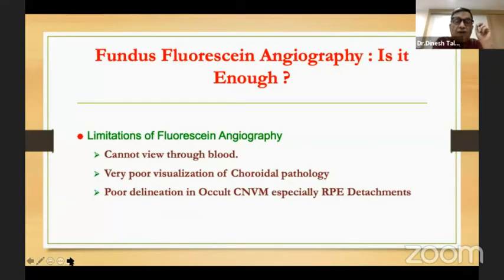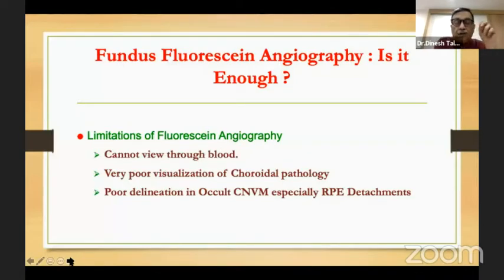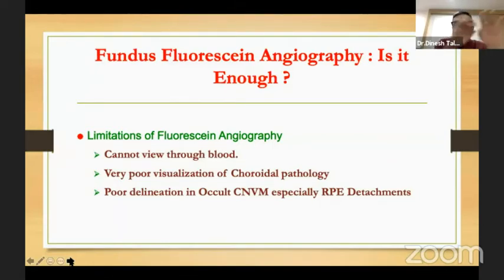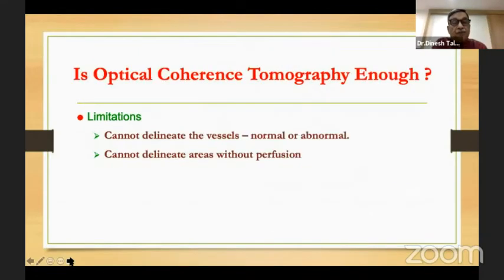With fluorescein angiography, the biggest limitation is you can't view through blood. Also, very poor visualization through choroidal pathology, very poor delineation of an occult CNVM. You can just see a gross leakage, especially with RPE detachments.